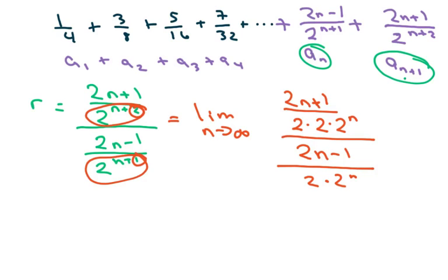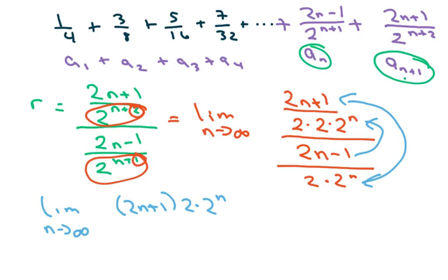Now, I'm going to flip this around and multiply. So I'm multiplying these two together, and I'm multiplying those together. So we have the limit as n approaches infinity over 2n plus 1 times 2 times 2 to the n over 2 times 2 times 2 to the n times 2n minus 1.